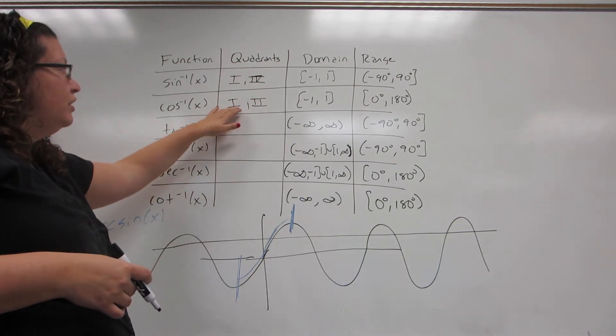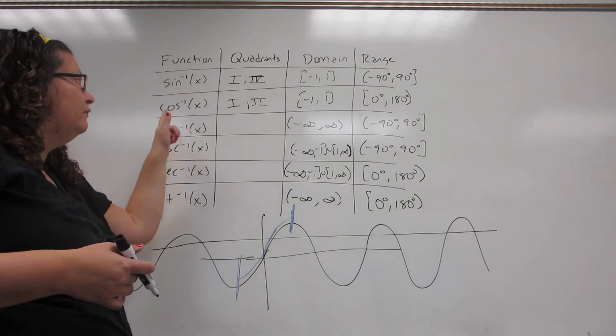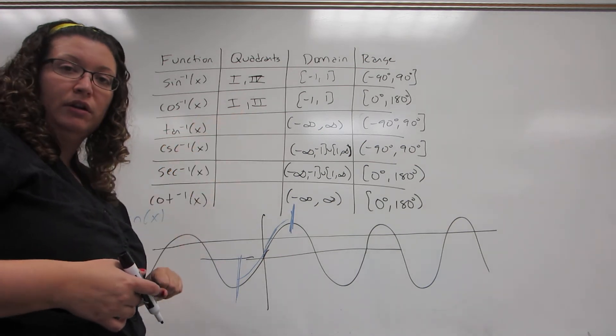Similarly, I take quadrant 1 and is cosine negative in quadrant 2 or 4? And it's 2, so that's the one I'm going to take.